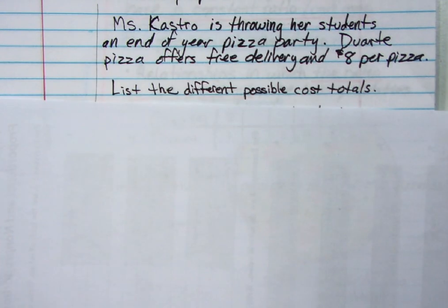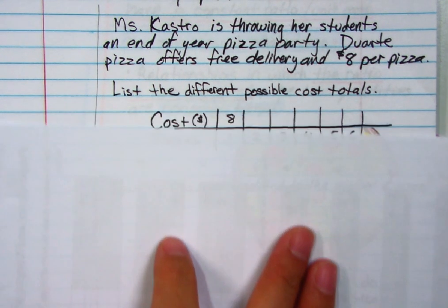Let's look at our first example. Ms. Castro is throwing her students an end-of-the-year pizza party. Duarte Pizza offers free delivery and eight dollars per pizza. Let's list all the different possible total costs. So let's think about it.